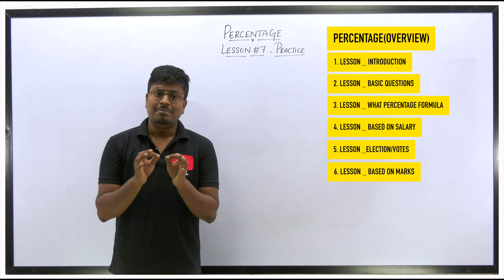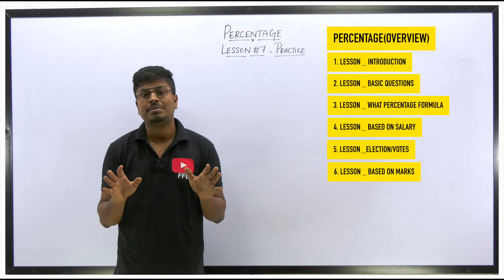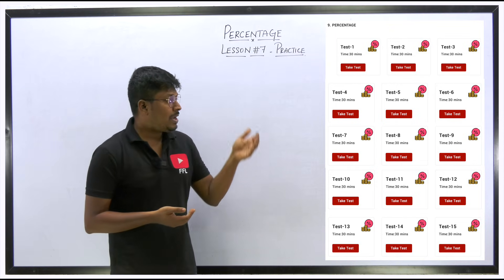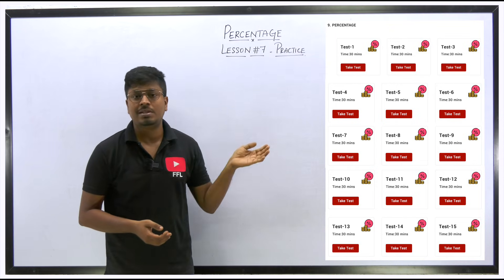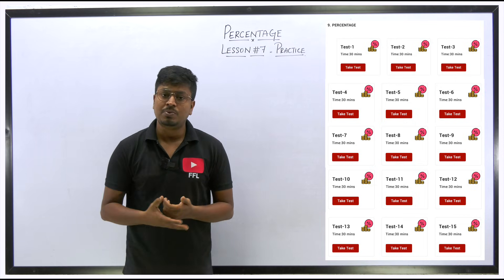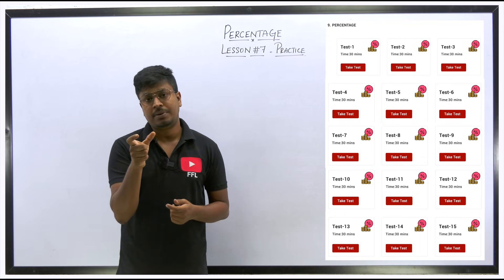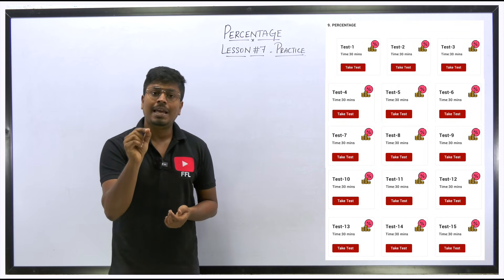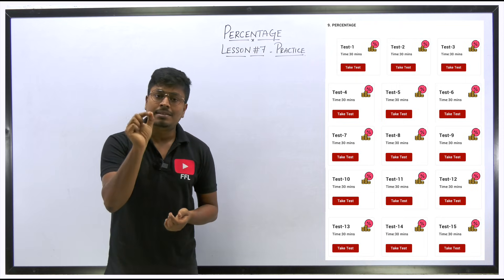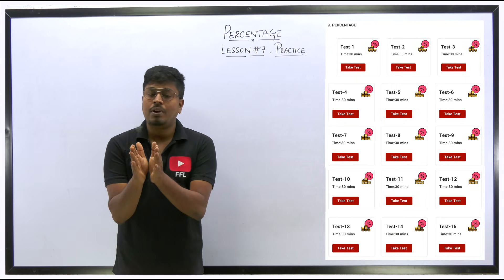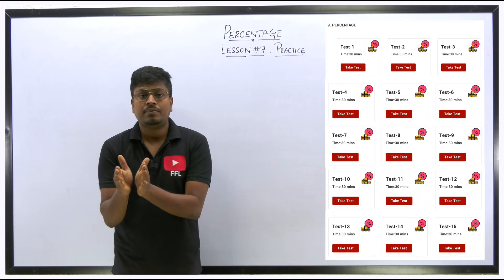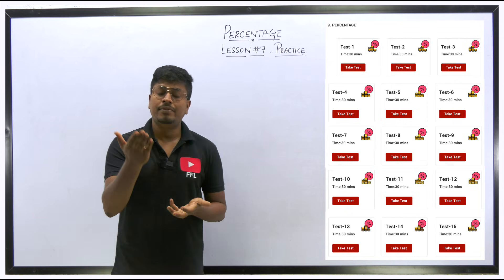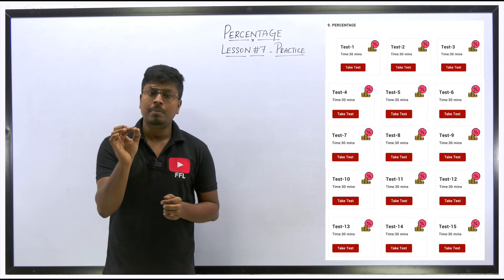Now, the main question asked by many students is: where can I go and practice all these questions? We have uploaded 440 questions on the test series. In the quantitative aptitude section, under the eighth or ninth topic, you can find percentages. There you will find 15 tests, each containing 25 questions, covering all 440 questions. If you have already purchased the test series, go to your dashboard.